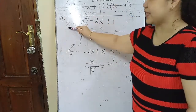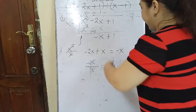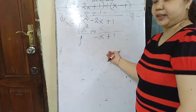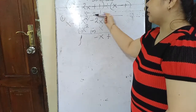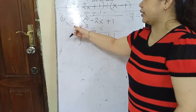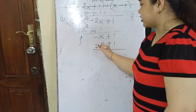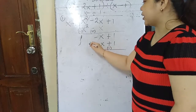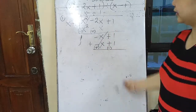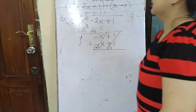Then change the signs of the subtrahend and proceed to addition. Negative x plus positive x is cancelled. Positive 1 plus negative 1 is also cancelled. So the answer is x minus 1.